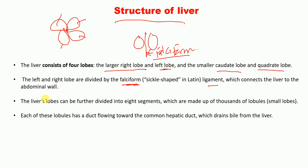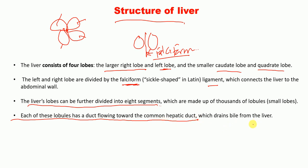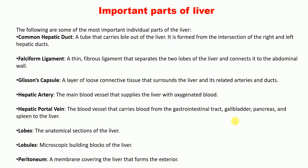Liver lobes can be further divided into eight segments, which are made of thousands of lobules. Each lobule has a duct flowing toward the common hepatic duct, which drains bile from the liver. The common hepatic duct is a tube that carries bile out of the liver; it is formed from the intersection of the right and left hepatic ducts.